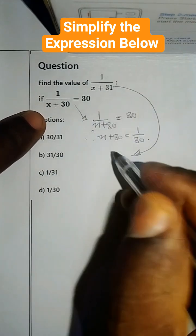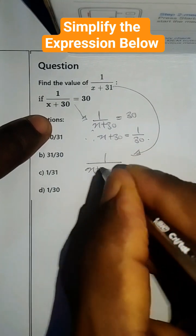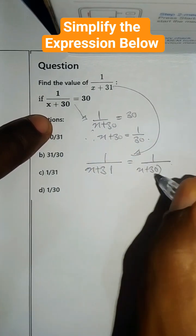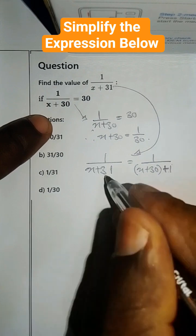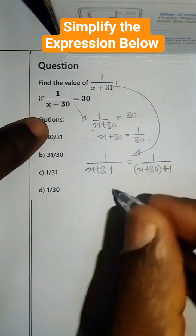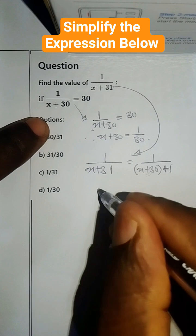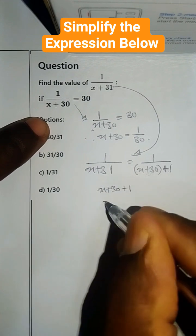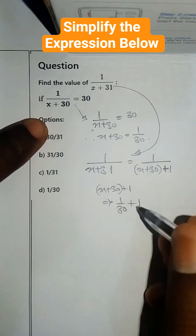Now, from here, we can see that 1 all over x plus 31 is equal to 1 all over x plus 30 plus 1, because 30 plus 1 gives us 31. We already know this value, so it means the whole of this — x plus 30 plus 1 — is equal to 1 all over 30 plus 1.